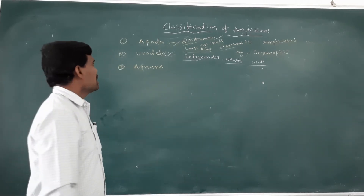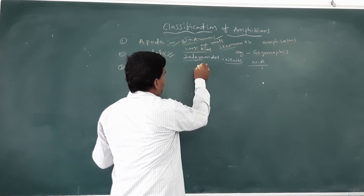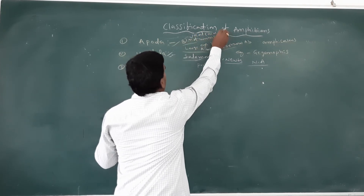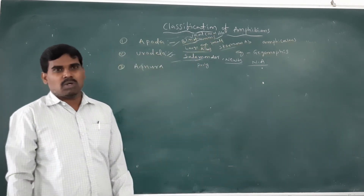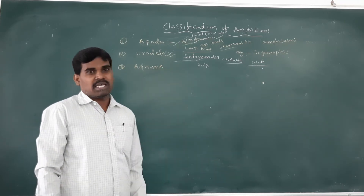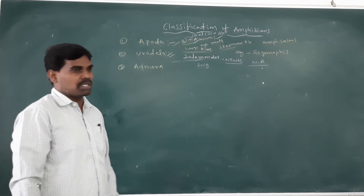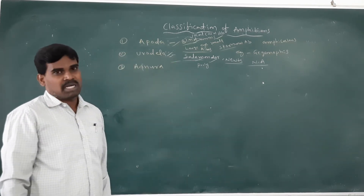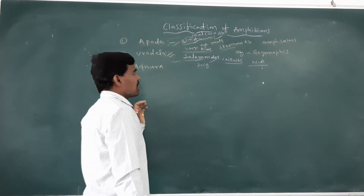This class of newts — the sternum is poorly developed, vocal cords are absent. Body is divided into head, trunk, and tail. This class of newts — the limbs: four limbs and hind limbs. Urodela class of newts — four limbs. The sternum is poorly developed.